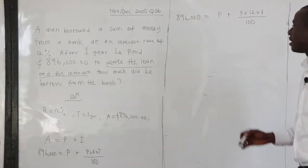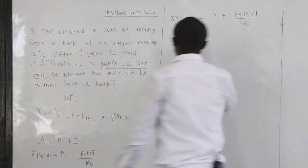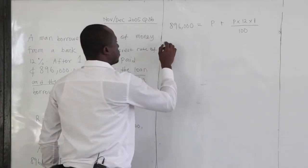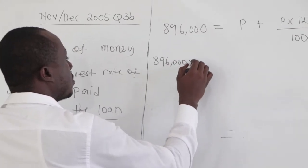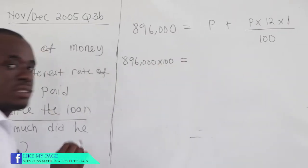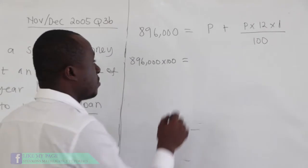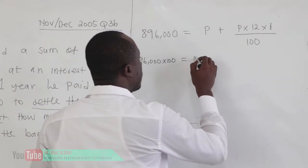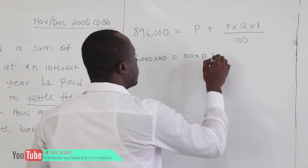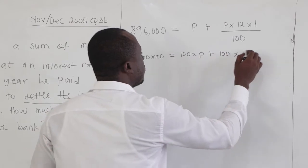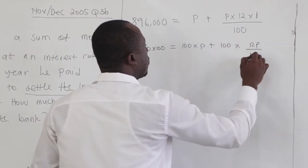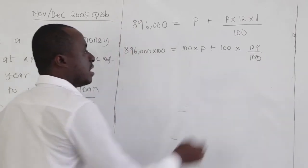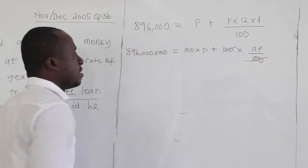From here, what is our LCM? Our LCM is 100. So multiply each term by 100. So 896,000 times 100. Then we have 100 times P plus 100 times 12P all over 100. Clearly, this 100 is canceling on that.